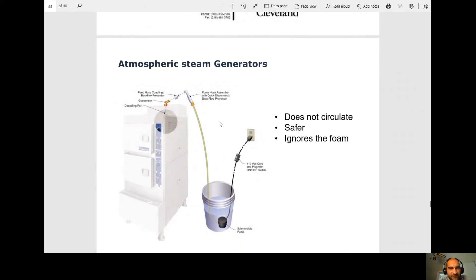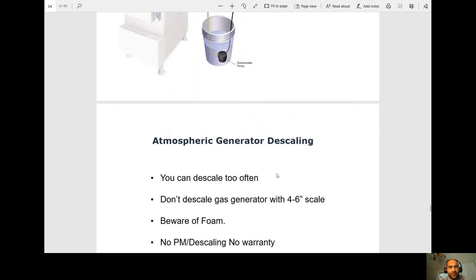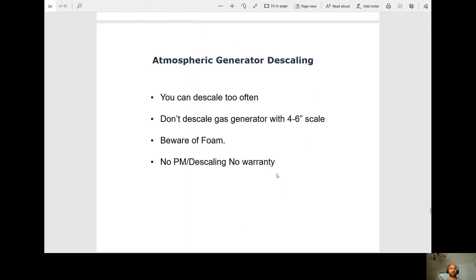So this is how we would descale the atmospheric steam generator. So they're using the pump here, but we could easily just go through this descaling port at the top and pouring our solution from there. So with the atmospheric, same as the pressure boilers, you can descale them too often. Any gas strainer that has 4 to 6 inches of scale, do not descale them. They are most likely going to leak if you remove that. Be aware of foam, meaning if it foams up. So we get foam when foam hits scale and there's no water there. It doesn't mean it's full. It means that it's hit scale. You need to add the total recommended amount. And same thing, if they're not doing PMs or descaling, the warranty will be voided.